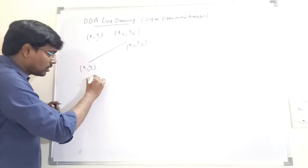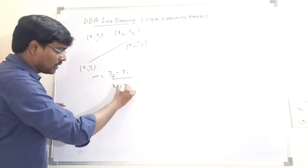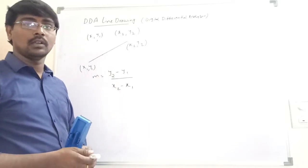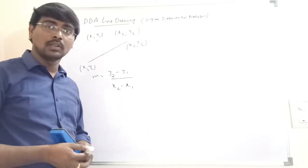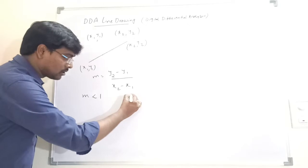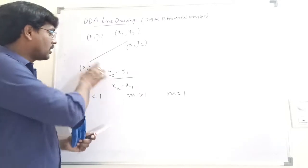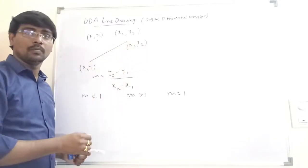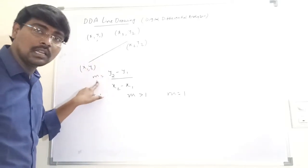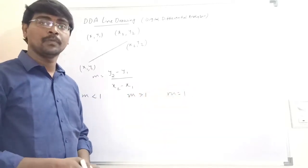For these two points, the slope of the equation is m = (y2 - y1) / (x2 - x1). Based on the slope, we identify the next point. The slope has three possible cases: whether the slope value is less than 1, greater than 1, or equal to 1.